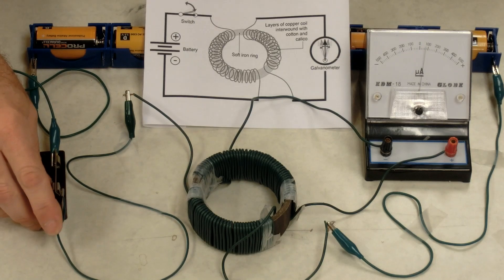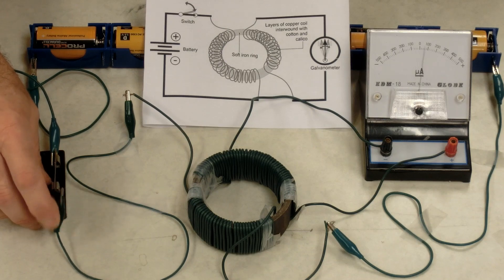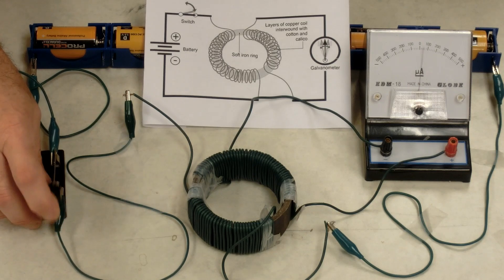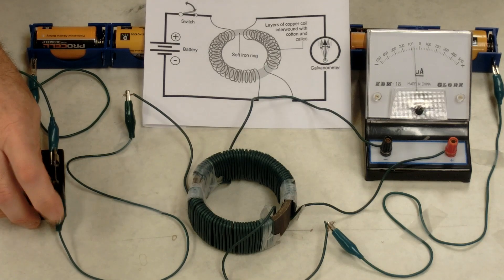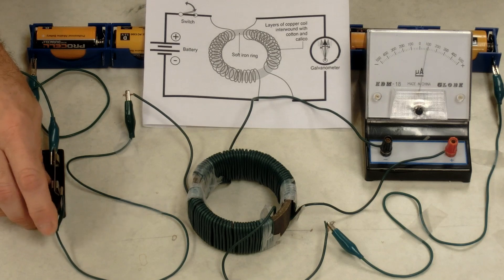If I continually turn this on and off, we can see the current continually keep switching directions. We call this alternating current. All we have to do to generate alternating current is have a magnetic field that continually switches directions.